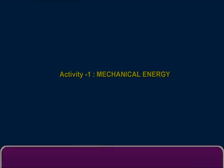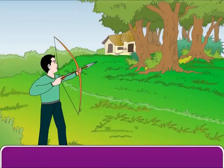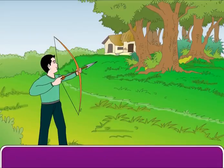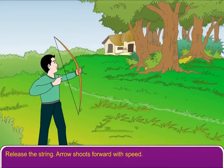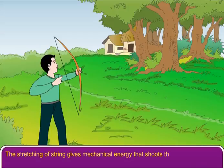Activity 1: Take a bow and arrow. Stretch the strings of the bow by placing an arrow on it. Release the string — the arrow shoots forward with speed. The stretching of the string gives mechanical energy that shoots the arrow forward.